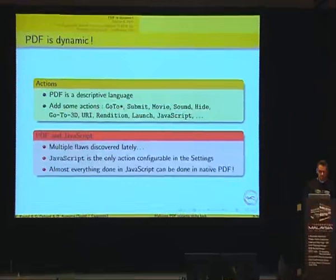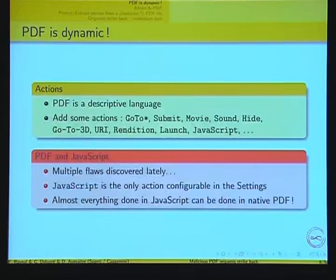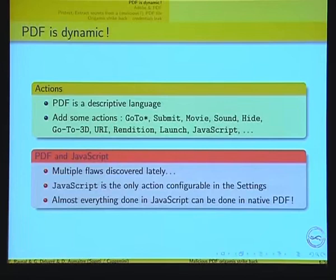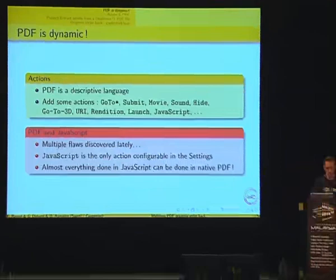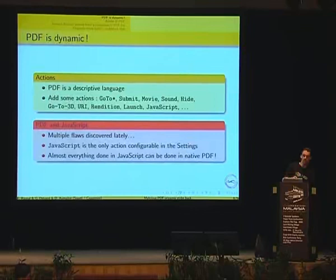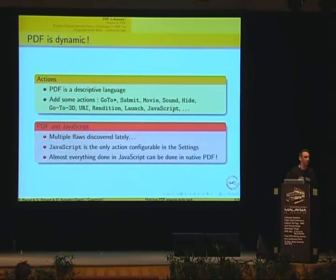PDF is dynamic. PDF is mainly descriptive — it says: here is a page, in this page there is some text, this text uses this font, it has this color, and so on. The main difference from other programming languages is that you don't have control instructions — no if statements, no loops. However, it is a dynamic language because it proposes features like playing a movie, playing a sound, 3D rendering, launching an external program, and of course JavaScript.